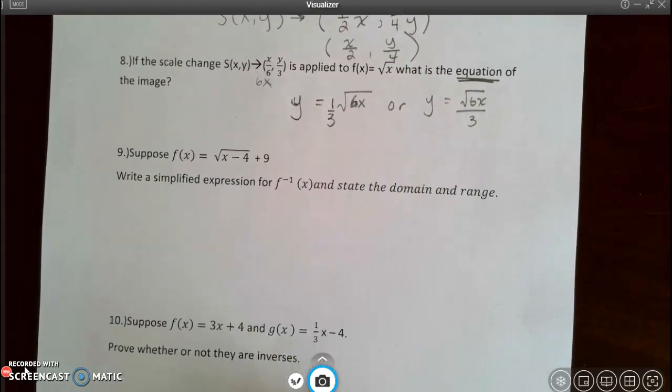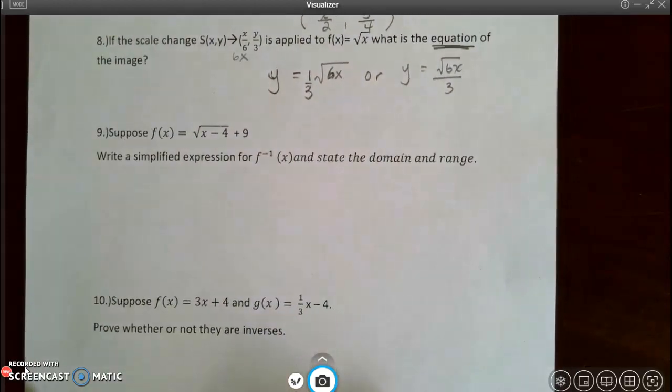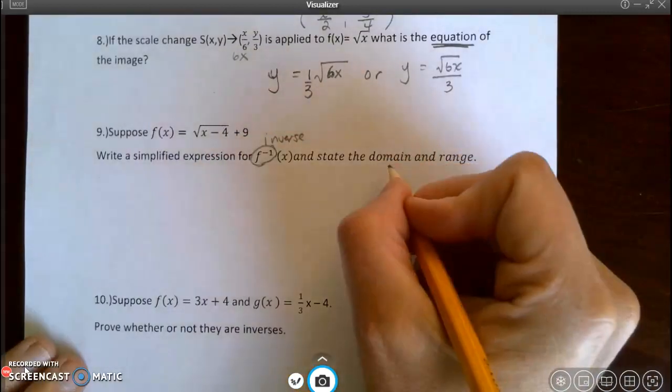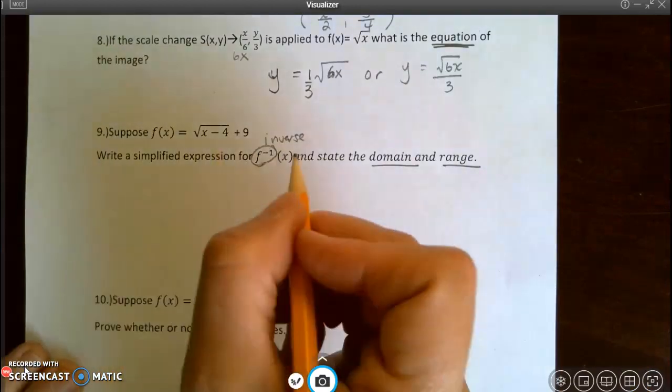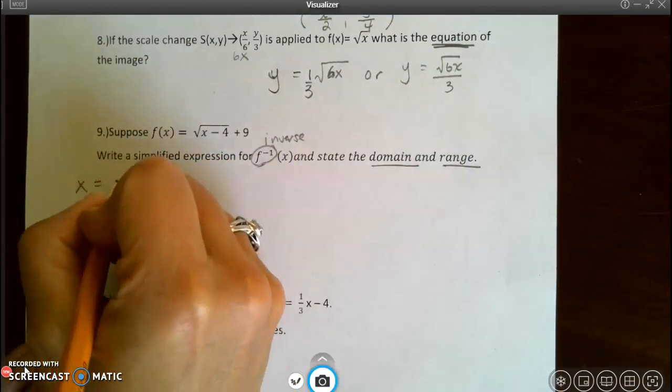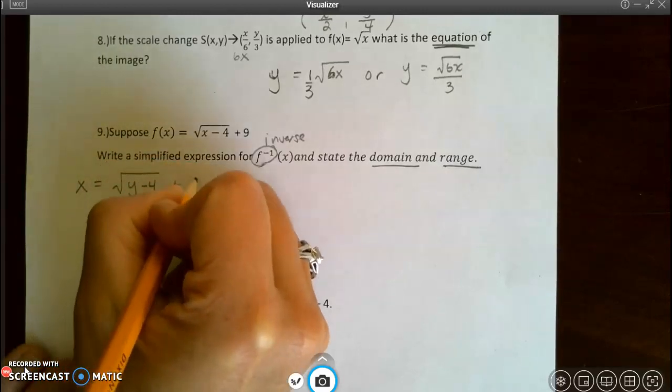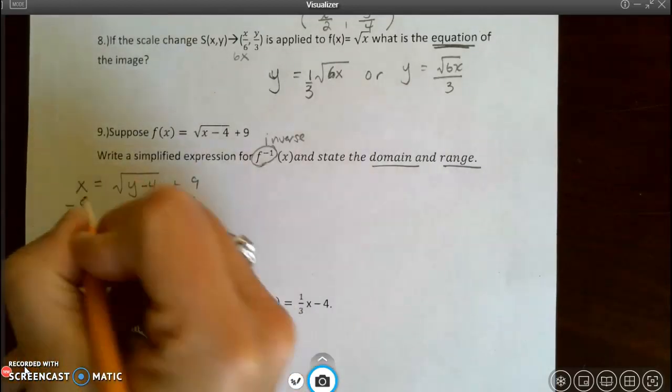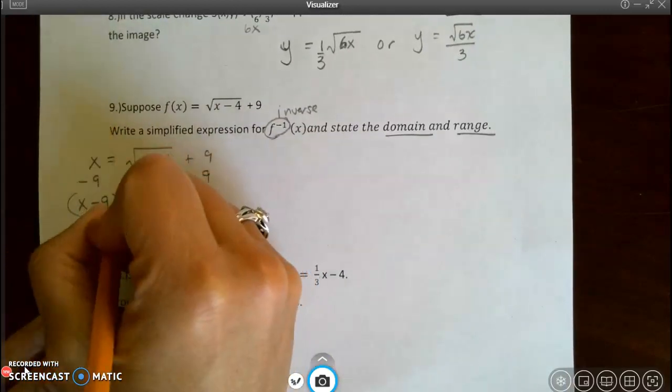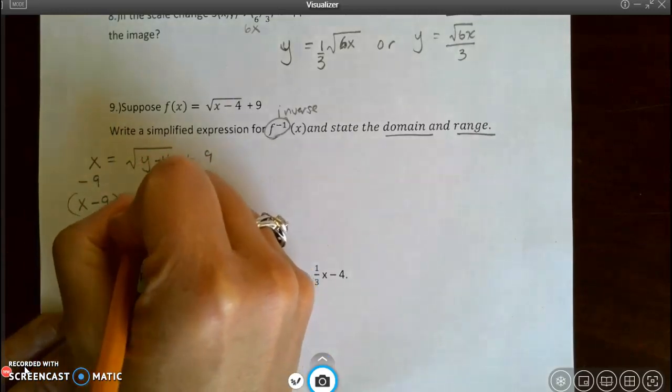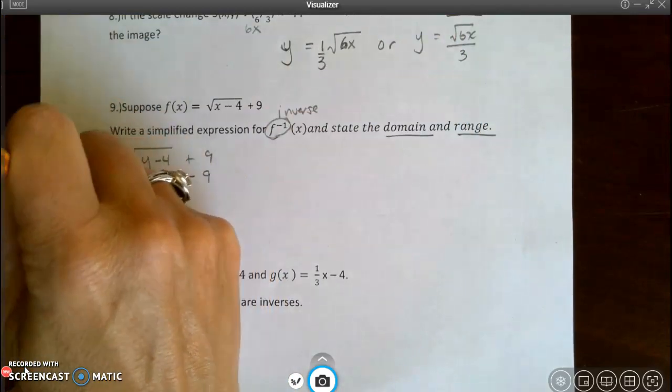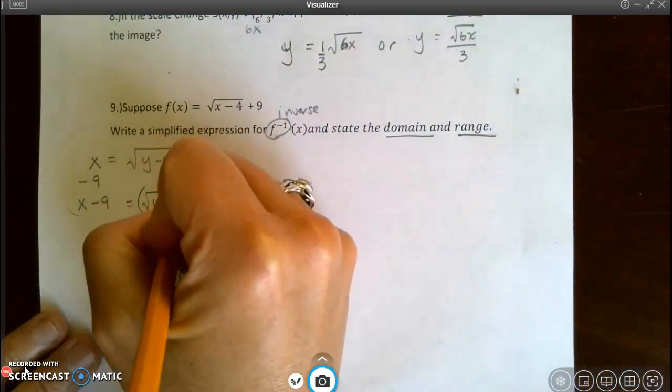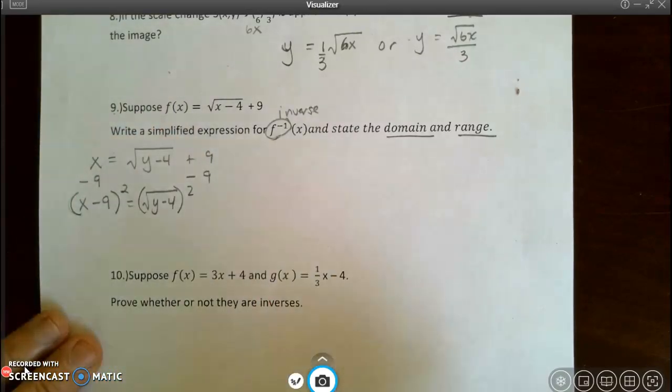Let's go to number 9. So I'm going to write a simplified expression for the inverse and state the domain and range. So to write an inverse, I have to first switch x and y. And now I have to solve for y. So I'm going to subtract 9 from both sides. And I get x minus 9 equals square root of y minus 4. I'm trying to solve for y, so I'm going to square both sides. For this problem, I'm going to suggest that you leave the parentheses around the x minus 9.